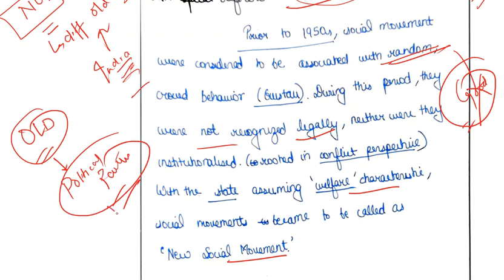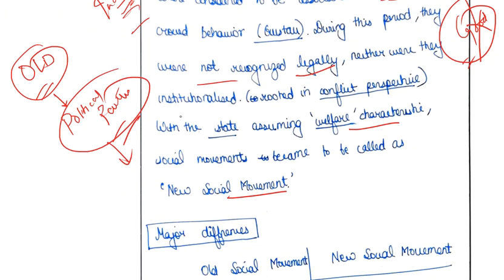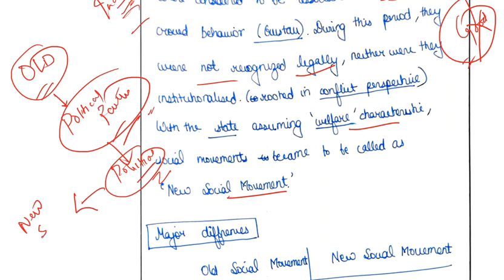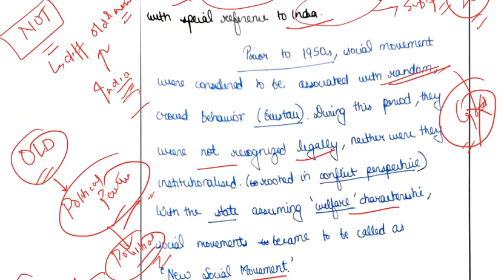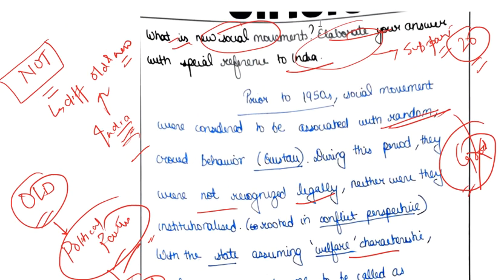With the passage of time, there was a disenchantment with political parties. Many sections of society tended to feel that their problems were not being adequately addressed through the conventional political process, and thus a new version of social movement arose that was independent of political parties. That is one major difference between old and new social movements.